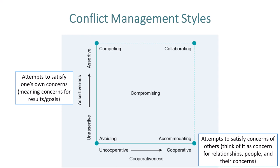Finally, we're going to look at conflict management styles. A conflict style is defined as a pattern response or behavior that people use when approaching conflict. There are five conflict styles that fall on two dimensions — you might note that these sound similar to the task-relationship grid in Unit 1. First, assertiveness refers to attempts to satisfy one's own concerns, meaning your concerns for results or goals. Cooperativeness represents attempts to satisfy the concerns of others — think of it as concern for relationships, people, and their interests.